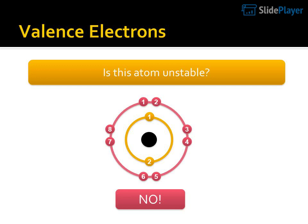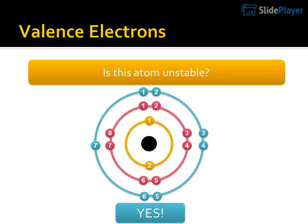Is this atom unstable? Electron configuration: 3, 7, 4, 2, 6, 5 — No. Valence electrons. Yes. Is this atom unstable? Configuration: 1, 2, 1, 2, 1, 1, 8, 3, 3, 7, 6, 5, 6 — Yes.